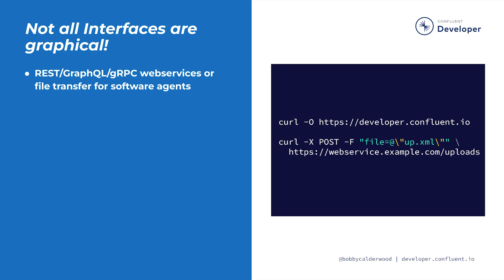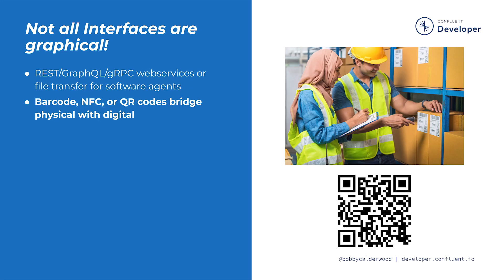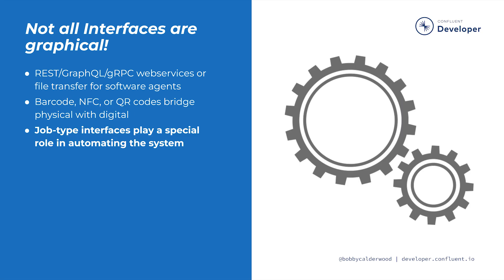If our users are likely to be or to build software agents, a web service API might be more appropriate than a graphical user interface. In other domains, specialized sensors or hardware like barcode, QR, or NFC scanners might be the proper interface to bridge between the physical and digital realms. Finally, we can automate our own systems by using job type interfaces, represented by a gear icon, that make decisions based on read model state and issue commands on behalf of some group of our users.